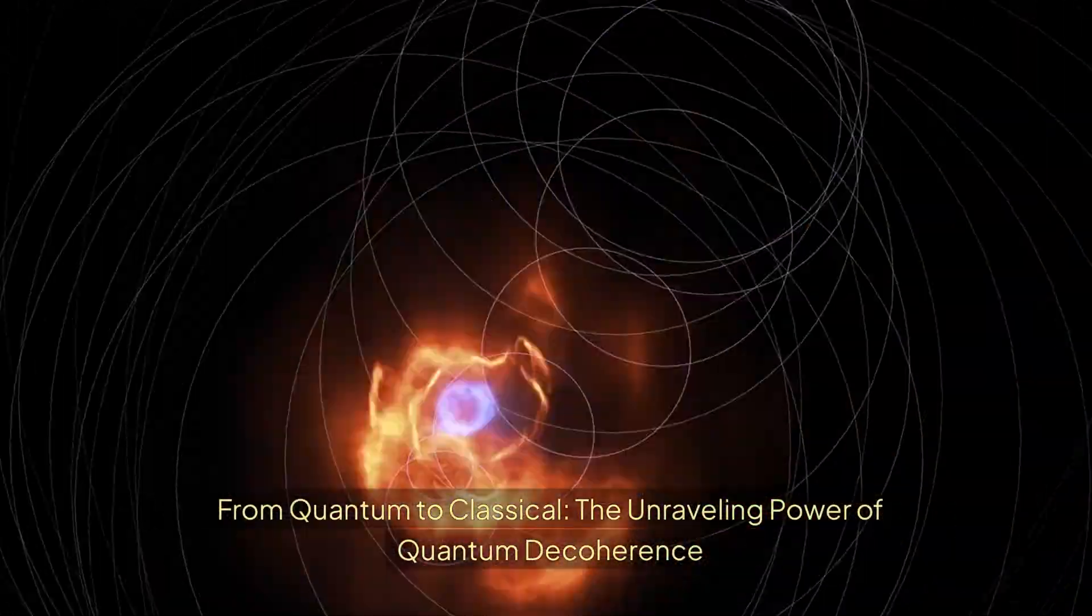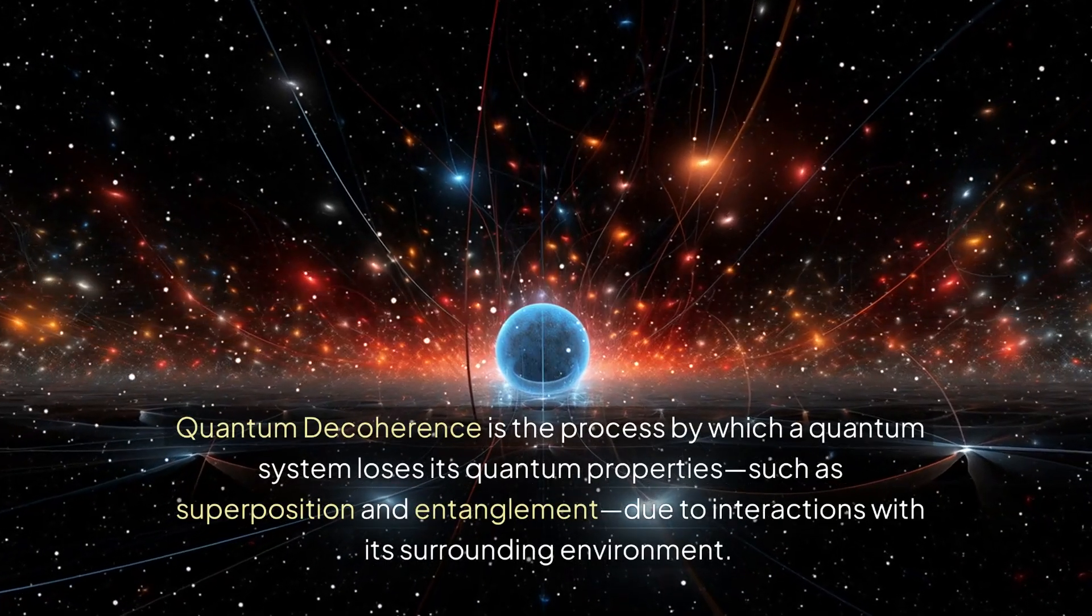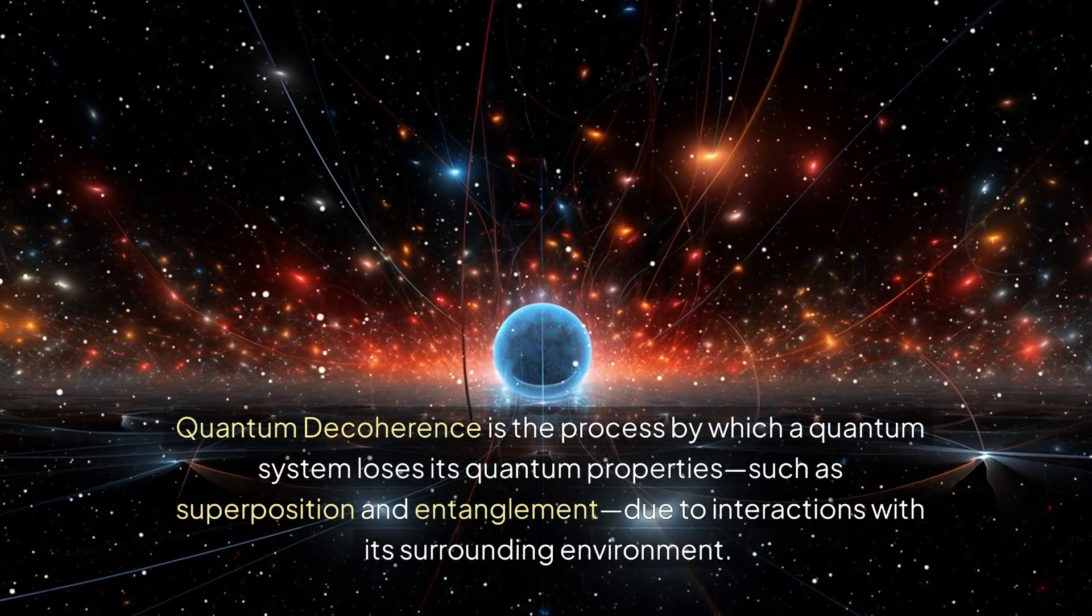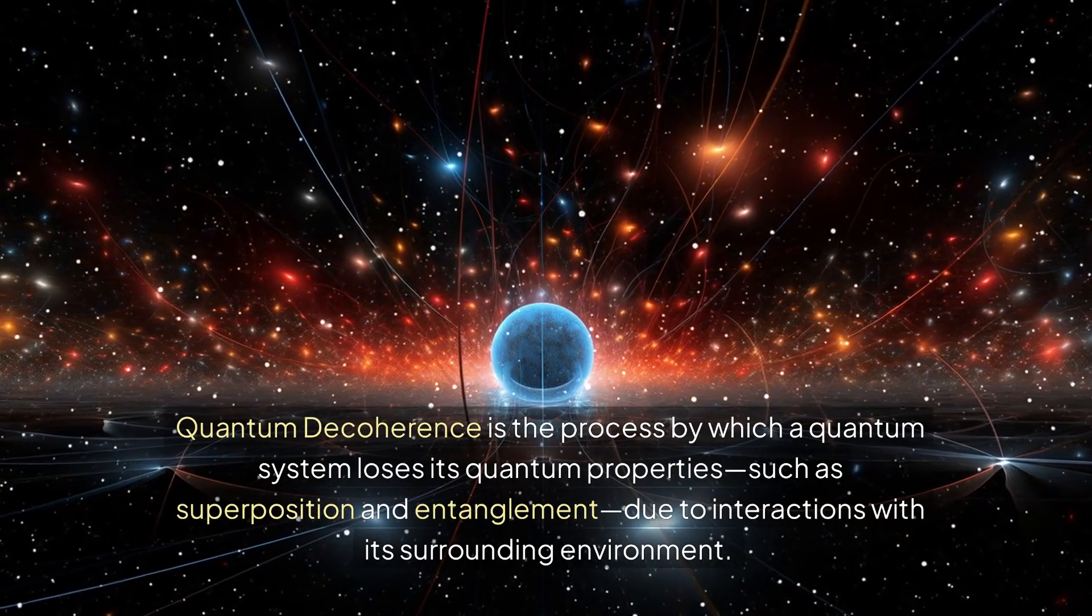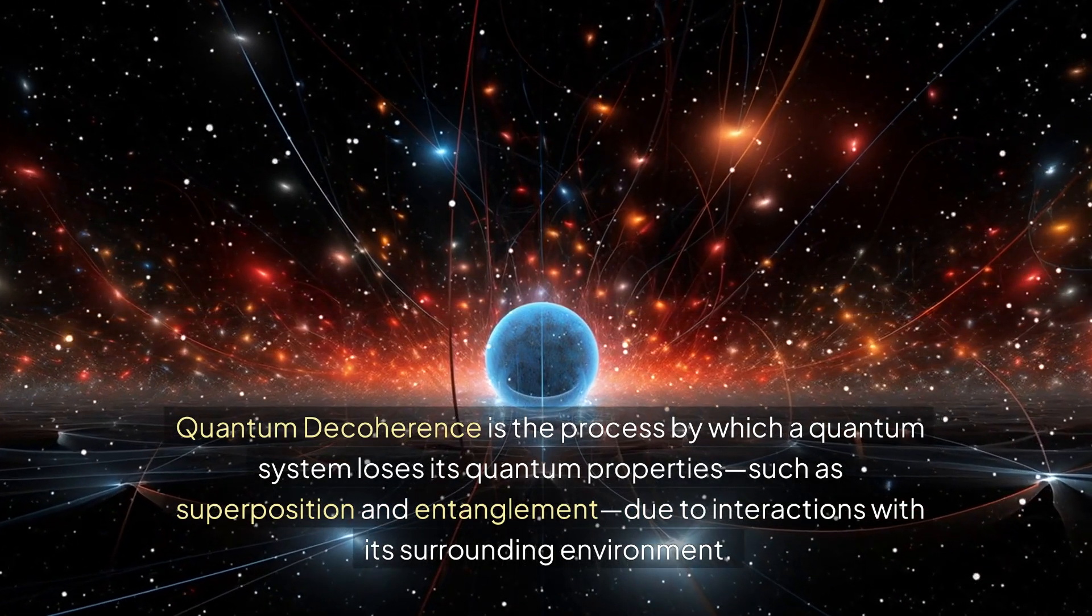From quantum to classical, the unraveling power of quantum decoherence. Quantum decoherence is the process by which a quantum system loses its quantum properties, such as superposition and entanglement, due to interactions with its surrounding environment.